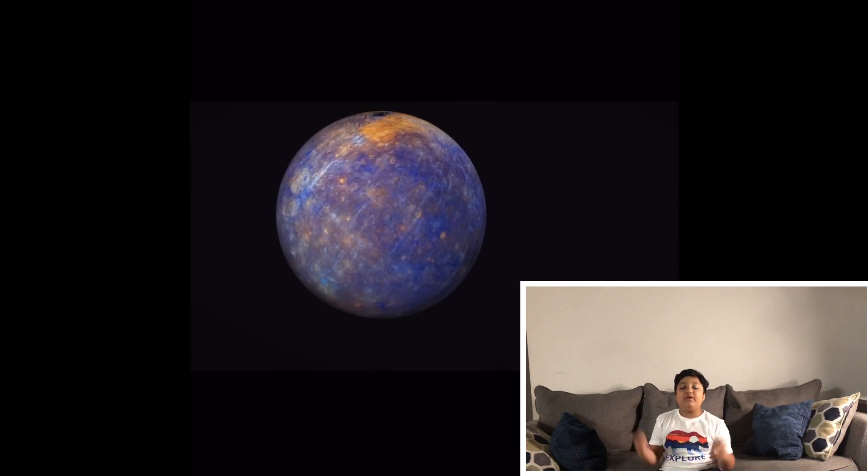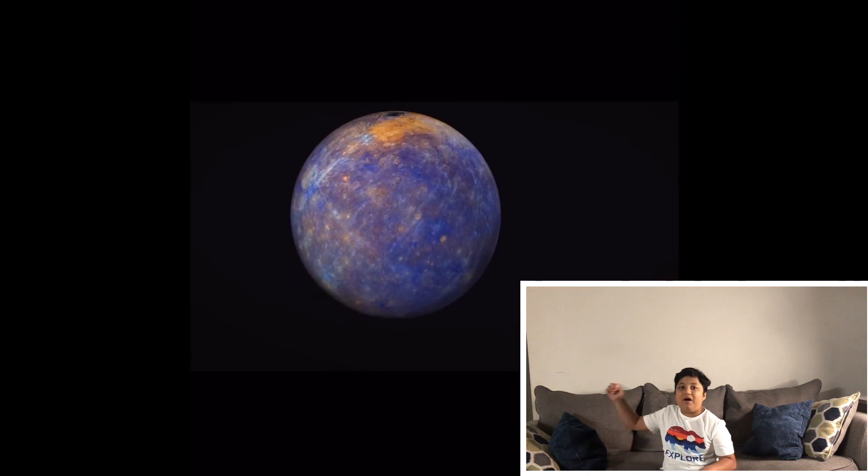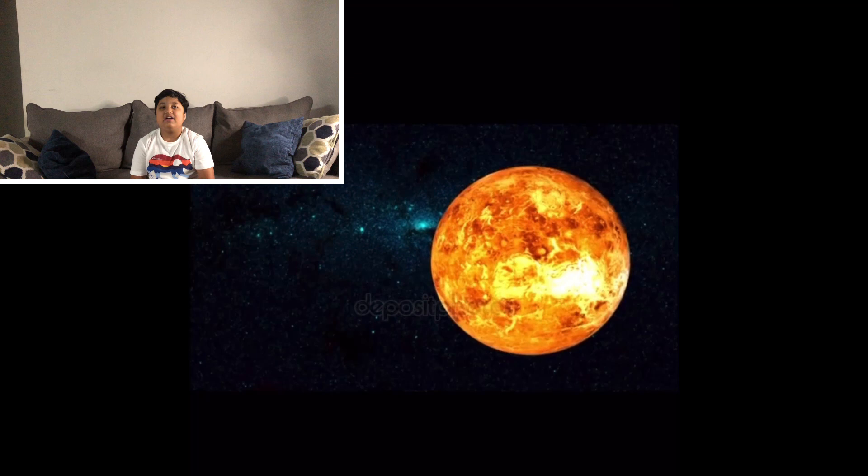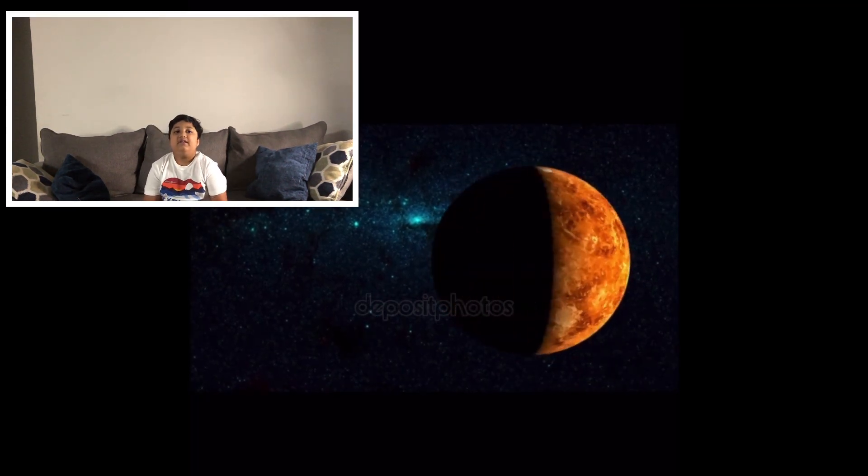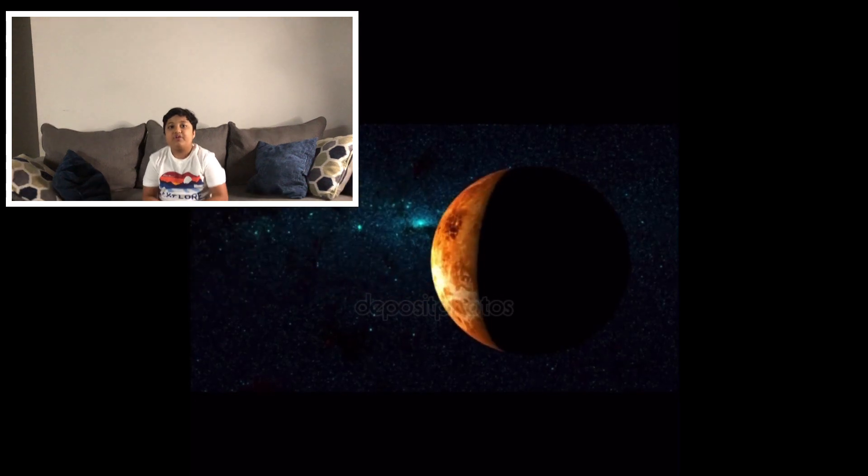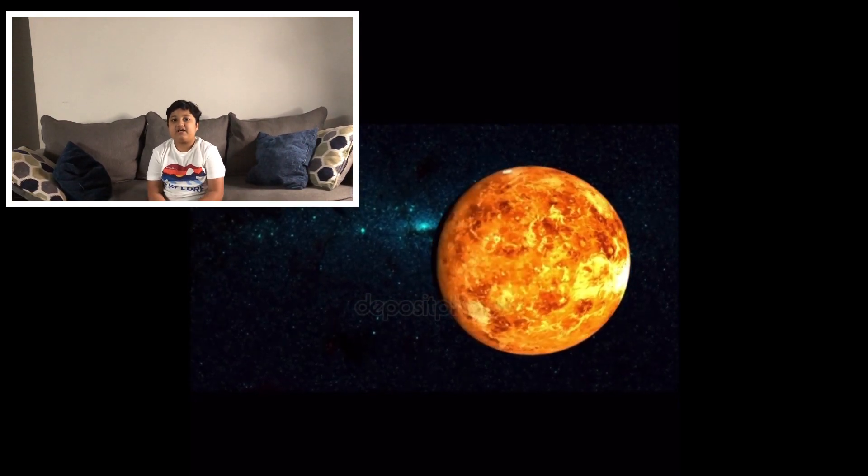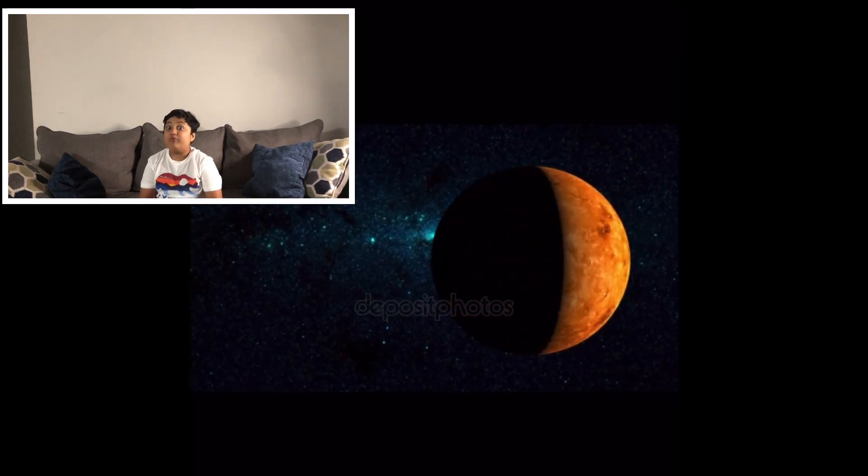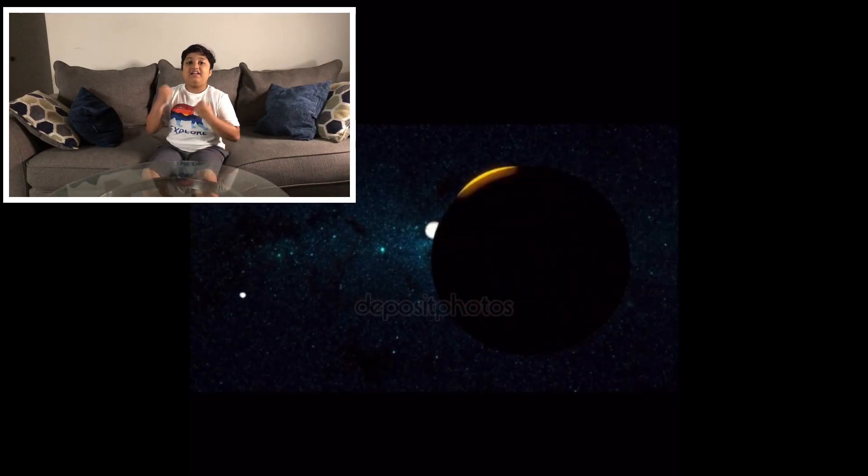Next is Venus, the second planet from the Sun. Some people call it Earth's sister because it's the same size and has the same gravitational pull, but they're very different on the surface. First of all, it's very hot and it's the hottest planet in our solar system.